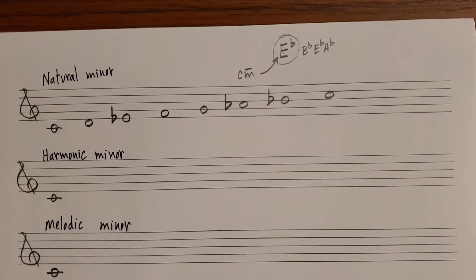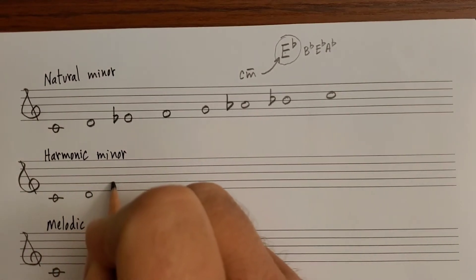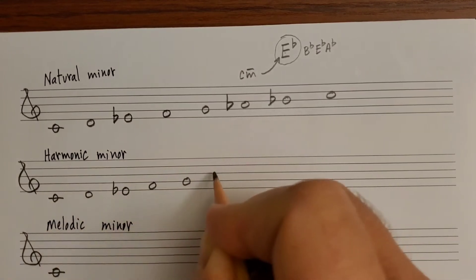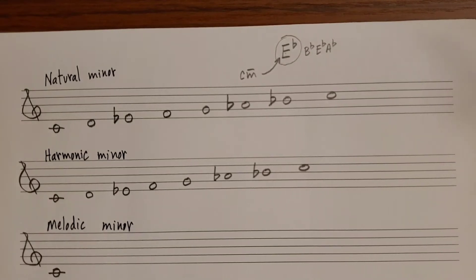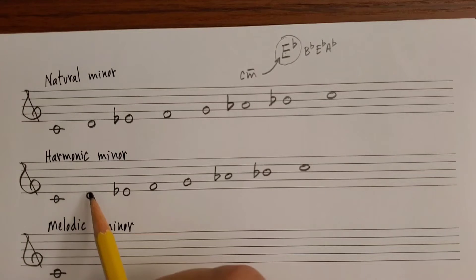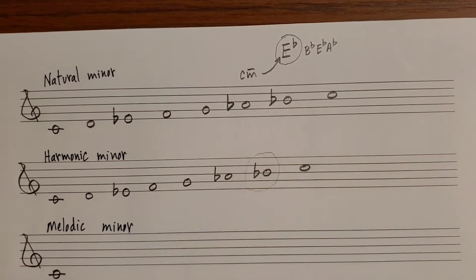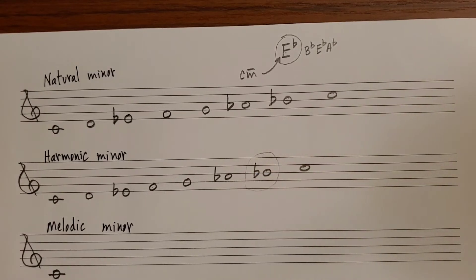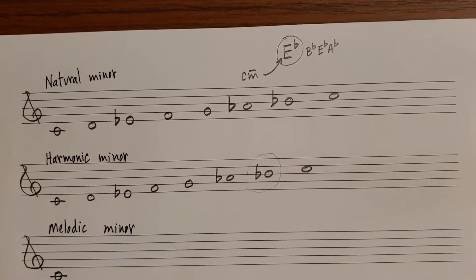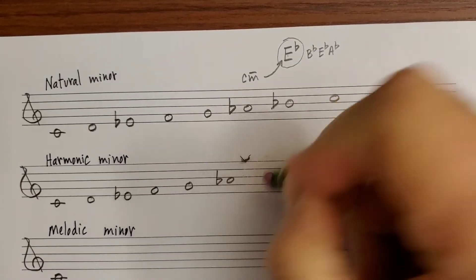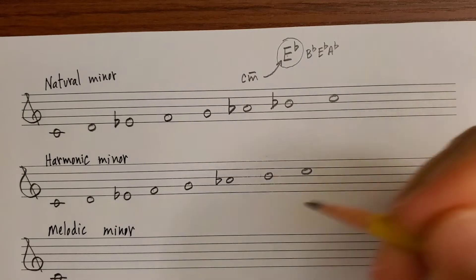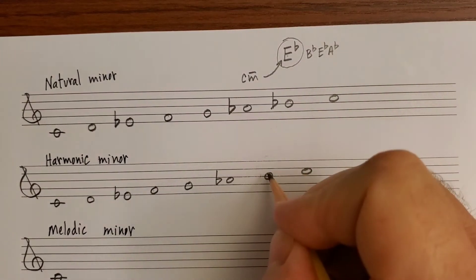To write the harmonic minor scale, begin with natural minor first. Then remember that harmonic minor raises scale degree seven in relationship to the natural minor. Count up: one, two, three, four, five, six, seven — that's scale degree seven. If it was a natural, it would become a sharp. If it's a flat, as in this case, it'll just become a natural. And if it's a sharp, it becomes a double sharp. So when you say raise by a half step: flat becomes natural, natural becomes sharp, sharp becomes double sharp. So I'll just erase this flat to make it into a B natural.